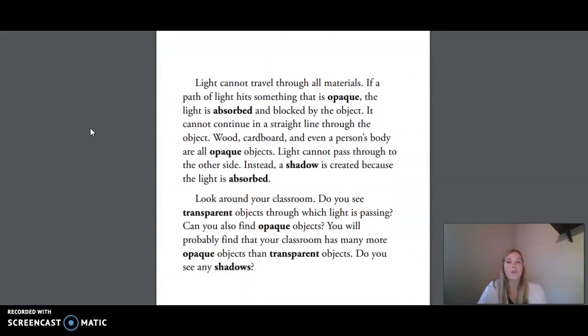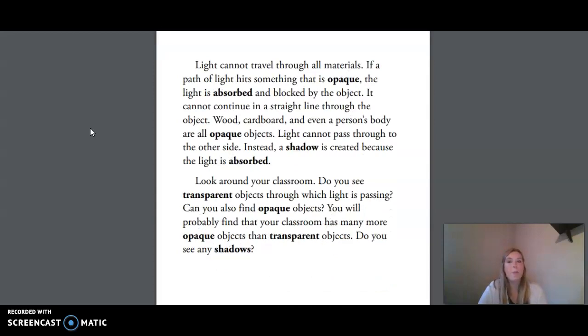Light cannot travel through all materials. If a path of light hits something that is opaque, the light is absorbed and blocked by the object. It cannot continue in a straight line through the object. Wood, cardboard, and even a person's body are all opaque objects. Light cannot pass through to the other side. Instead, a shadow is created because the light is absorbed. Look around your classroom. Do you see transparent objects through which light is passing? Can you also find opaque objects? You will probably find that your classroom has many more opaque objects than transparent objects. Do you see any shadows?